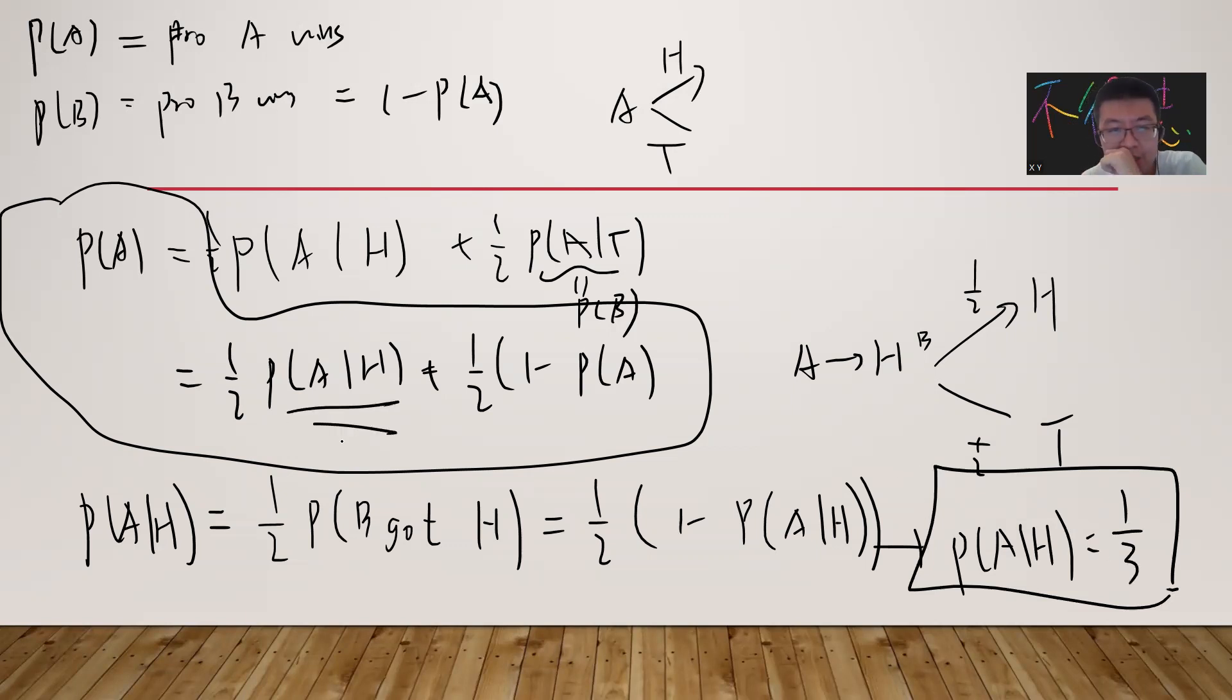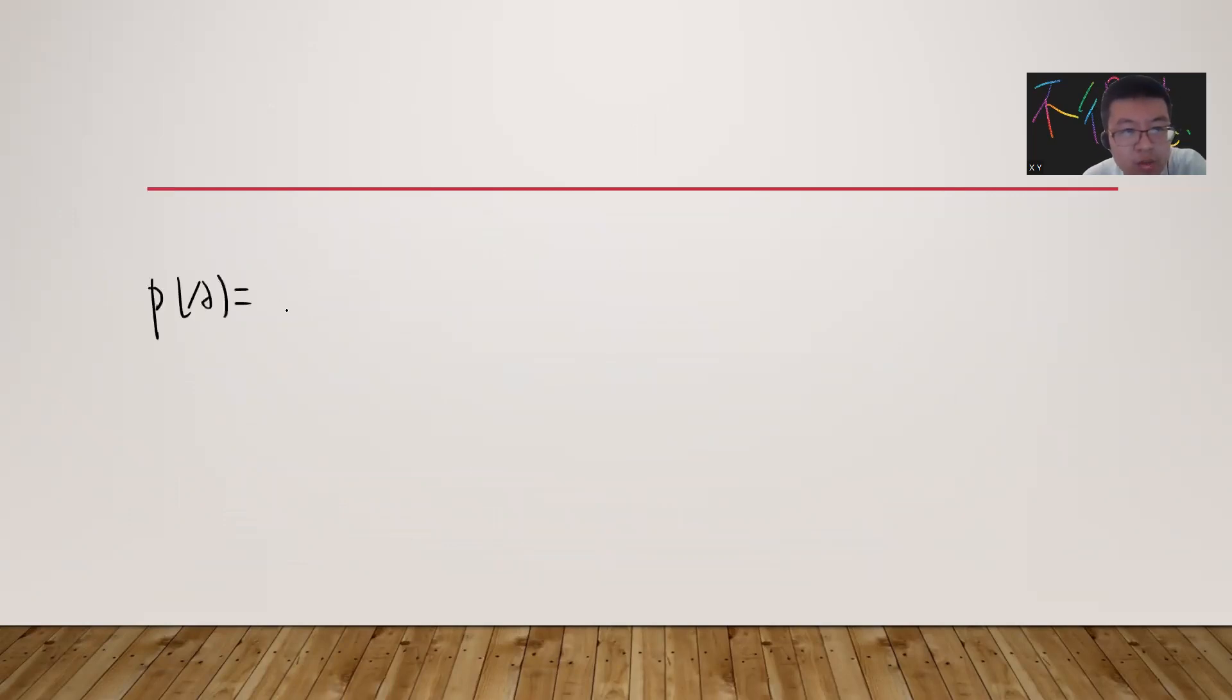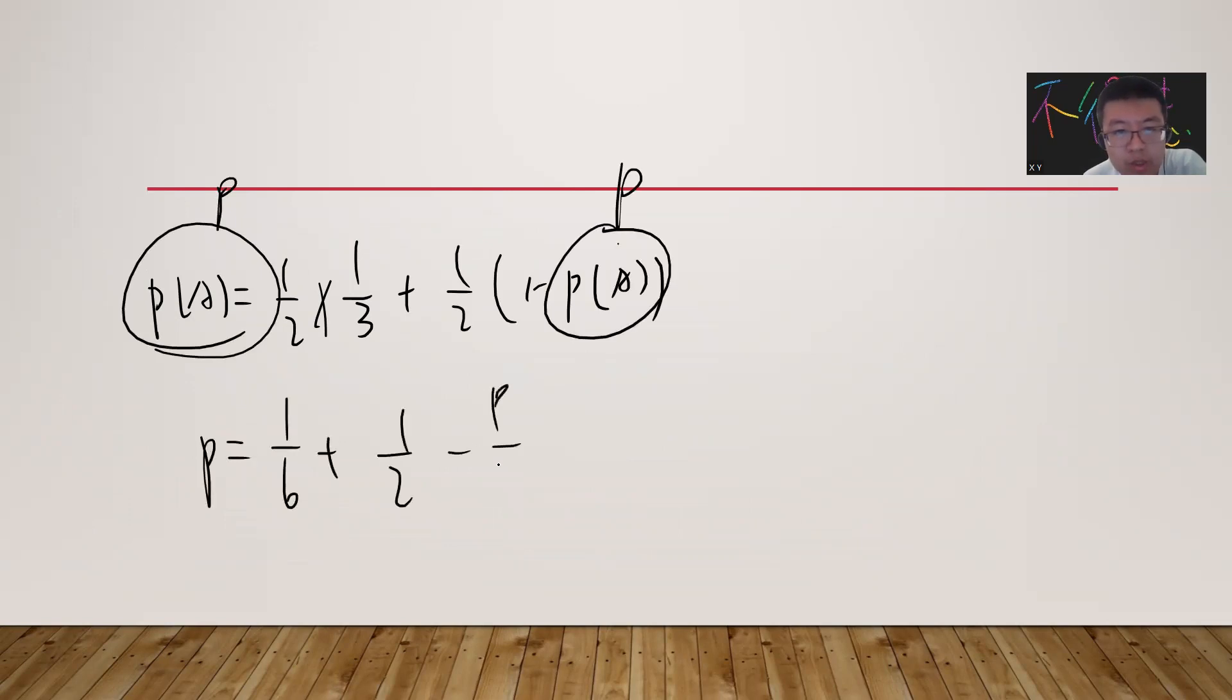You can substitute P(A|H) equals one divided by three into the first equation. So you get P(A) equals half times one divided by three plus half times one minus P(A).